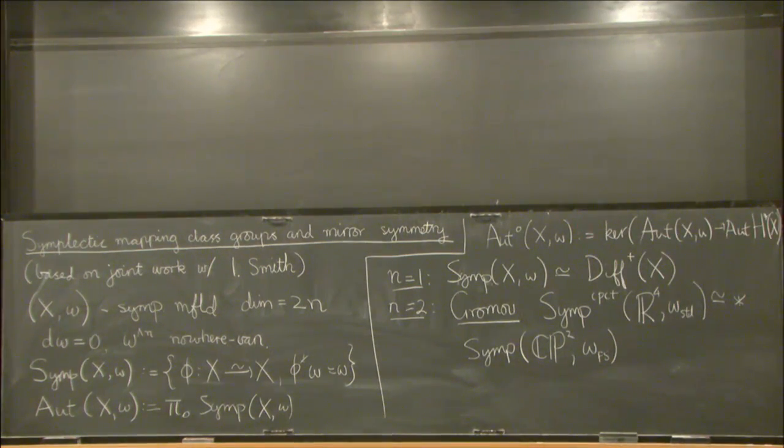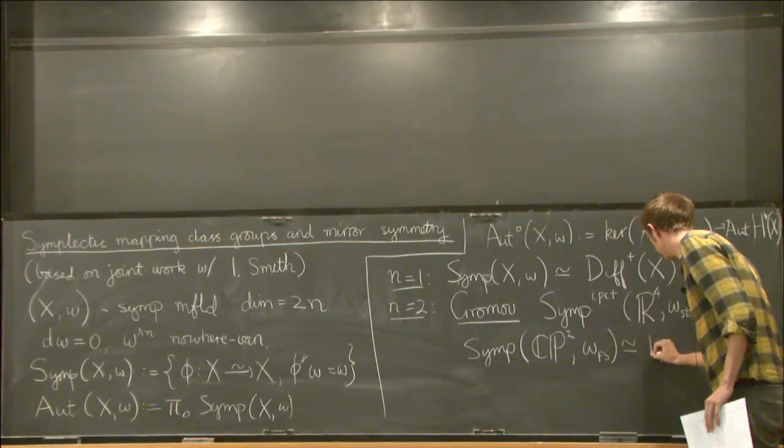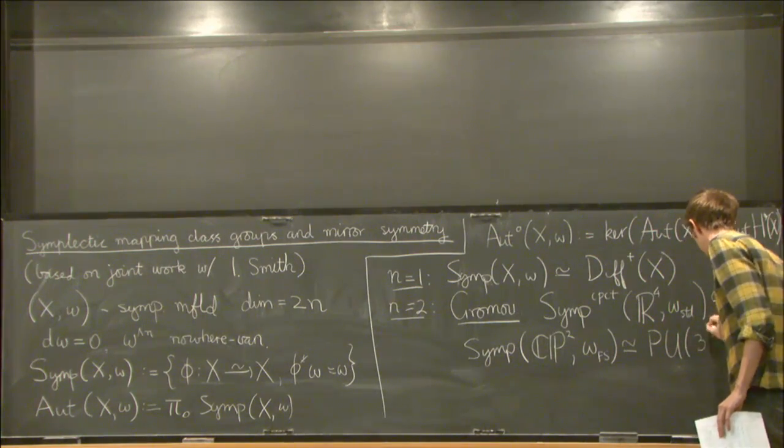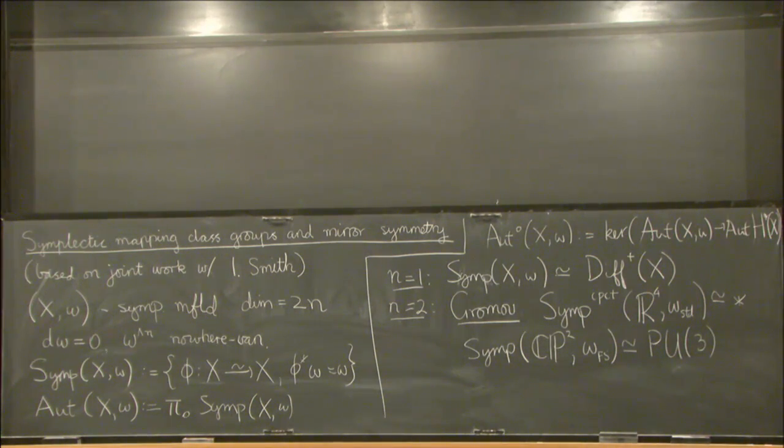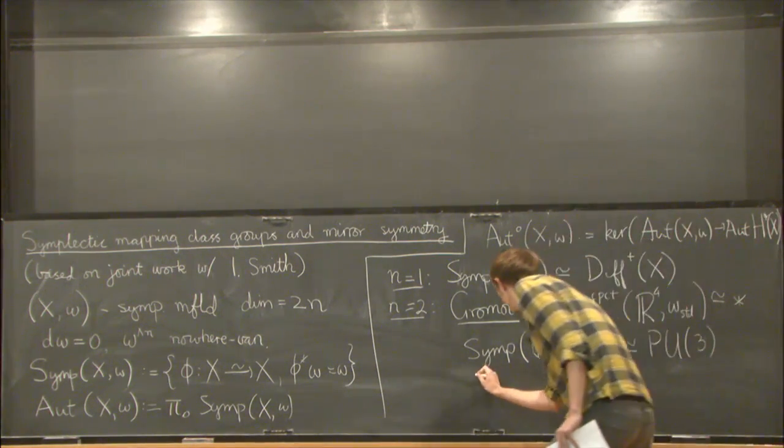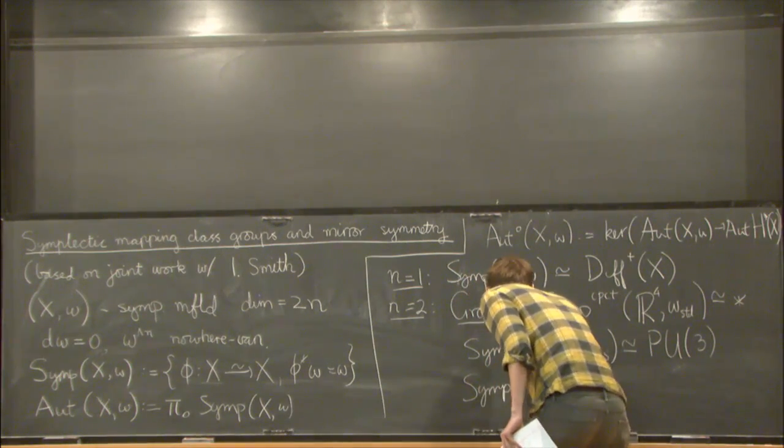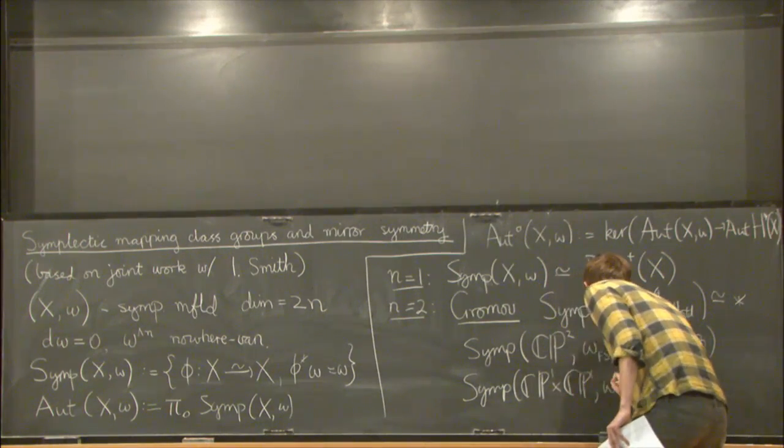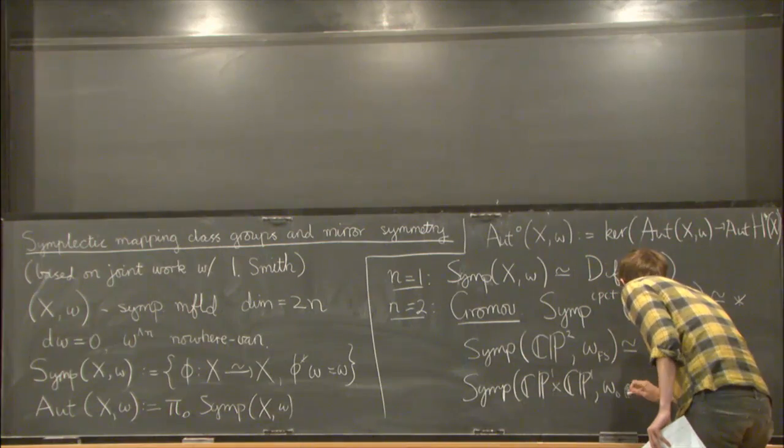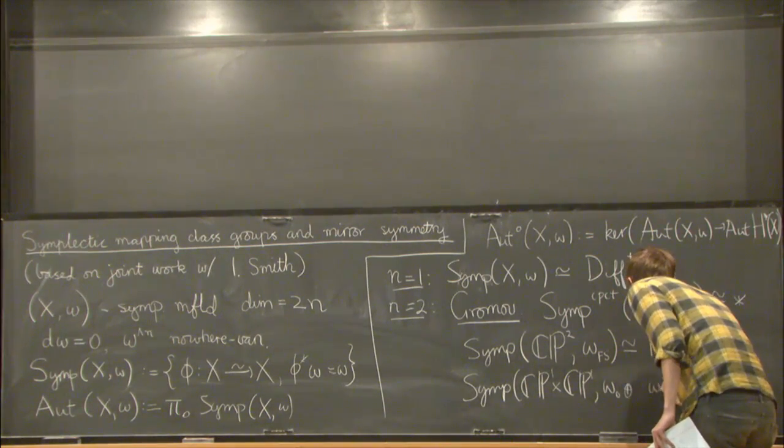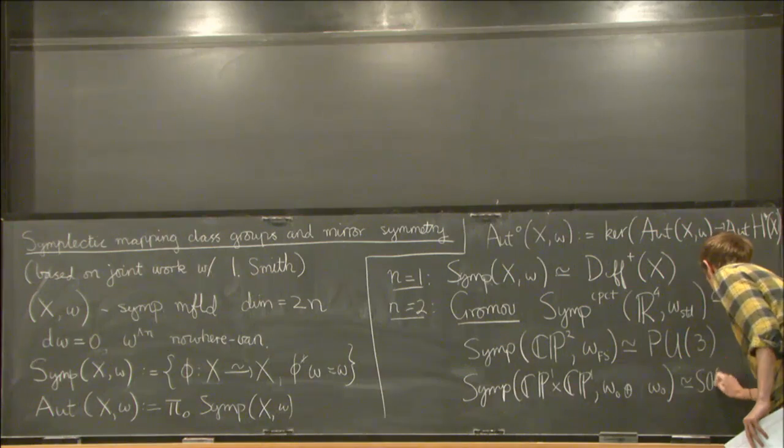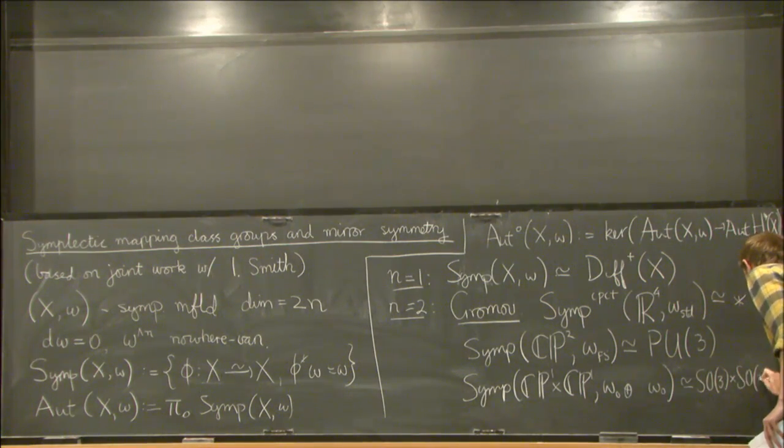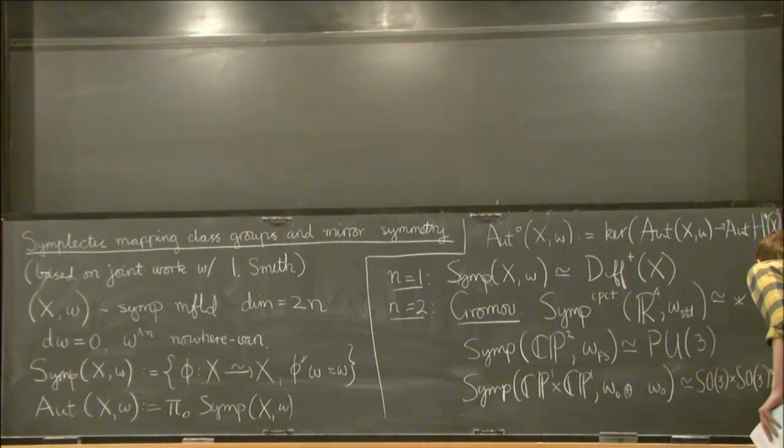If we take the Fubini study form on CP2, Gromov also proved that this is homotopy equivalent to PU3. It's a perfectly reasonable answer.